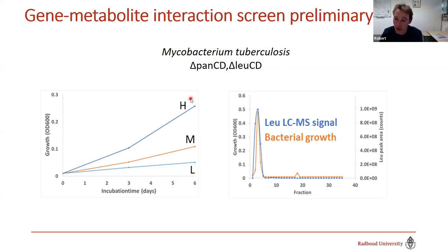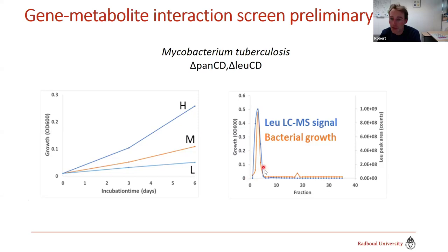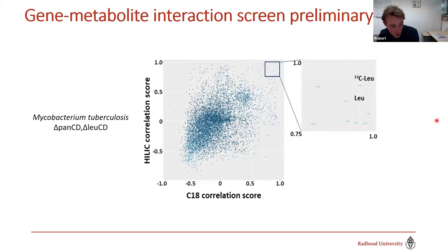As a proof of concept, we used a leucine auxotroph — a strain that requires leucine for growth. Adding low or high concentrations of a metabolite extract rescued growth. We then fractionated the extract and added all fractions to this strain: only some fractions rescued growth. Targeted metabolomics confirmed leucine was present in those fractions. We then pretended we didn't know this and used untargeted metabolomics to do the correlation analysis.